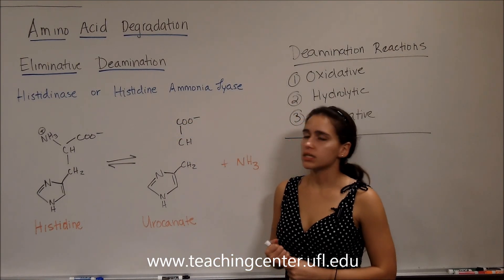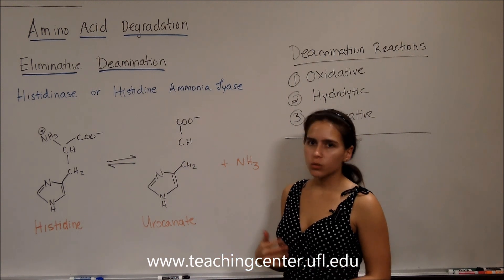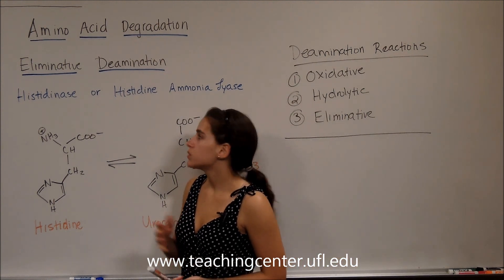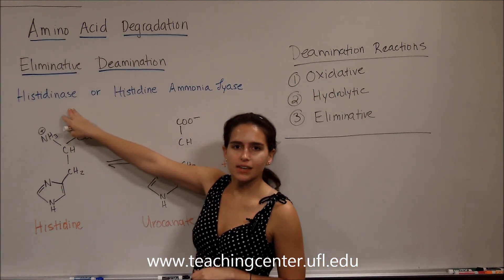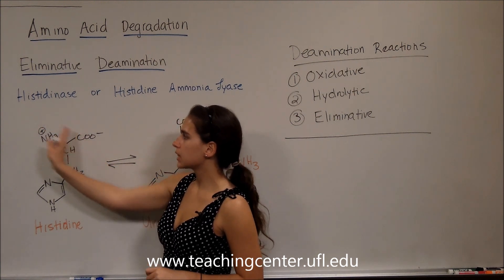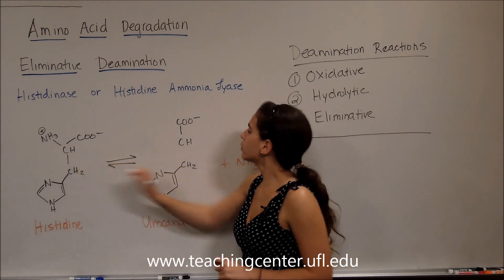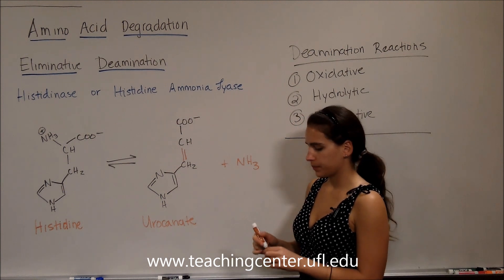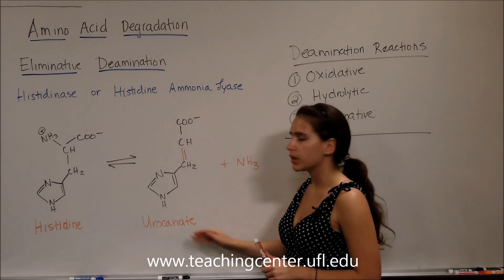Eliminative deamination simply takes out the amino group without water and without NAD+. The enzyme here is histidinase, or histidine ammonia lyase. Because of histidinase, we start with histidine, which has its amino group. We take that off, forming a double bond and producing a molecule called urocanate. It's simply the elimination of that amino group to form this new molecule.